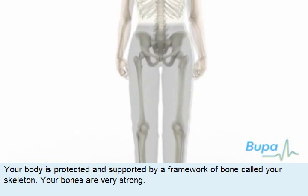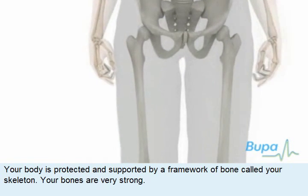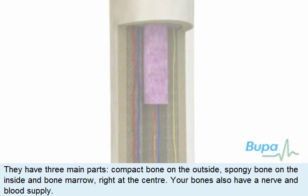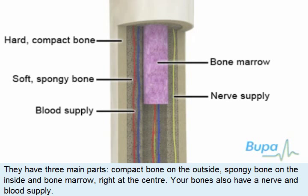Your body is protected and supported by a framework of bone called your skeleton. Your bones are very strong. They have three main parts: compact bone on the outside, spongy bone on the inside, and bone marrow right at the centre. Your bones also have a nerve and blood supply.